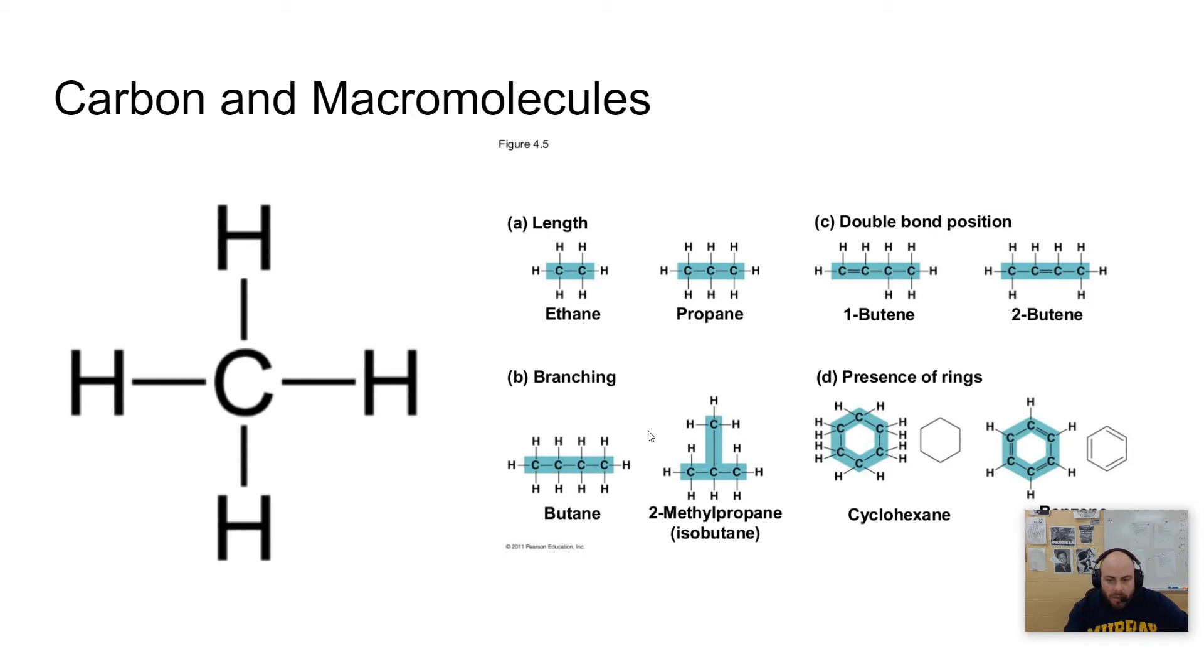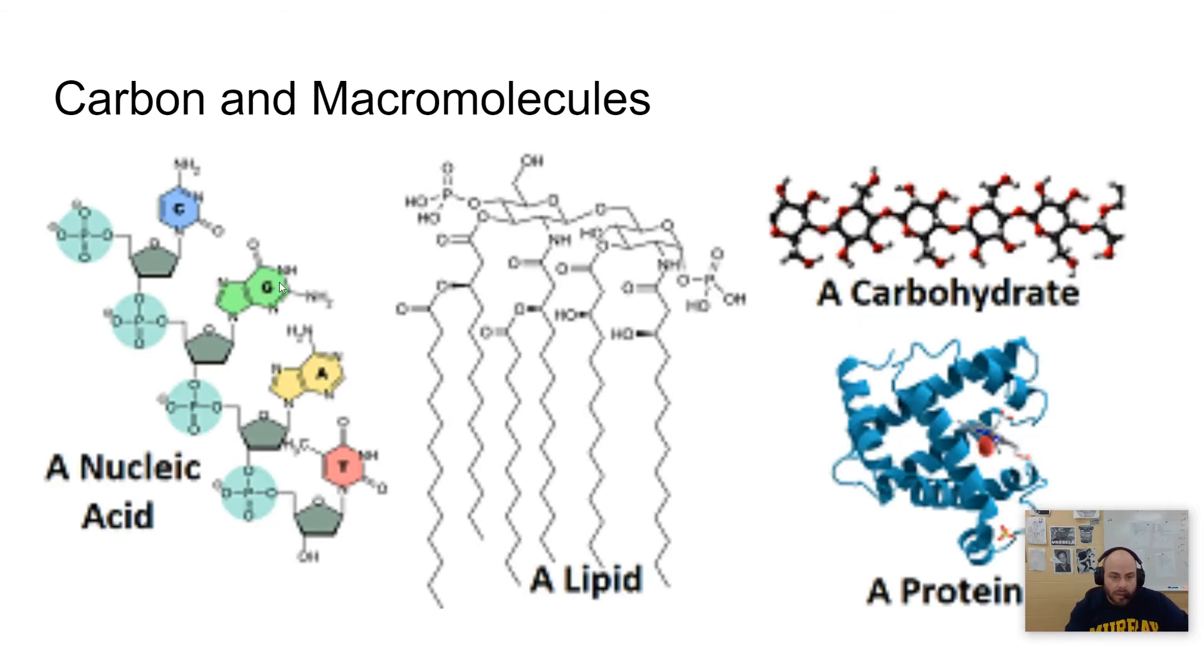Carbon-based molecules are typically used to store energy because of the energy that is bound up in those bonds, and also used to create lots of different cellular structures. And so here are some examples of some nucleic acids and some lipids, carbohydrates, proteins. These are the four groups of macromolecules that we're going to be talking about in this unit, the nucleic acids, lipids, carbs, and proteins, and their functions and their structures in a little bit more detail.